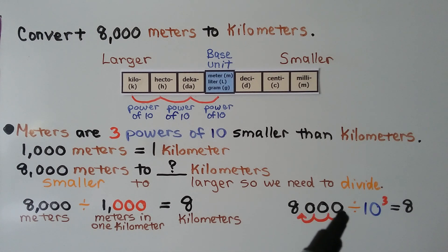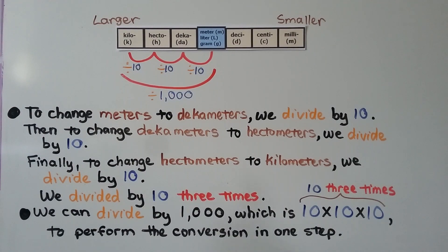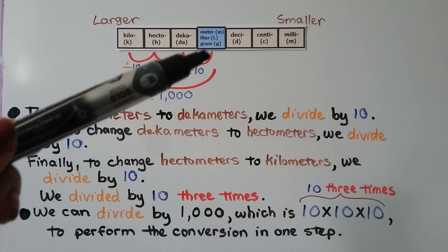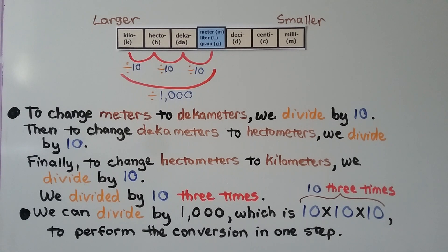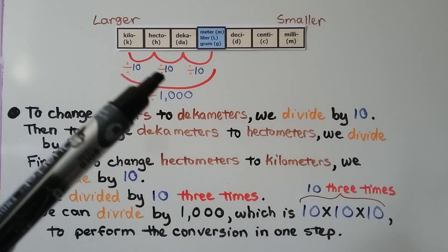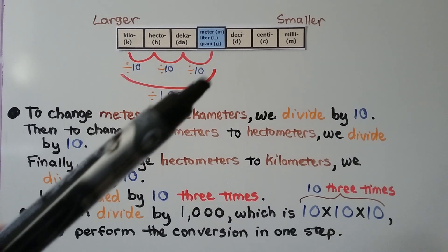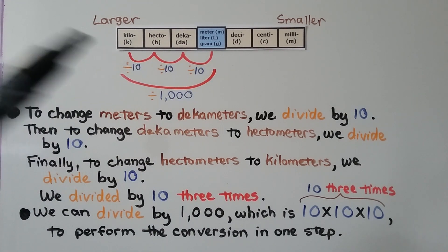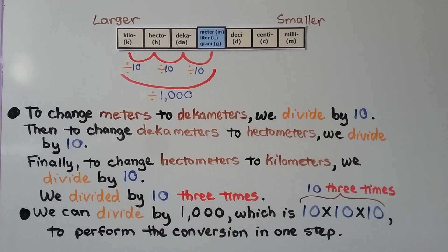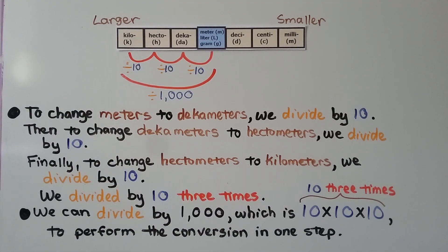We move the decimal three hops: 1, 2, 3. That moves it from after the last zero to between the 8 and the zeros, which means it's just 8 ones. To change meters to decameters, we divide by 10. Then to change decameters to hectometers, we divide by 10 again. And finally to change hectometers to kilometers, we divide by 10 once more — so we divide by 10 three times. And we can divide by 1,000 because 10 × 10 × 10 = 1,000, performing the conversion in one step.